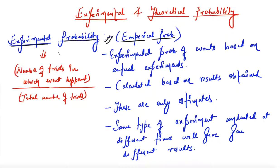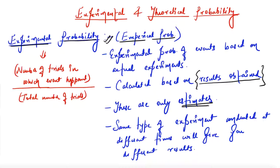Whatever experiments you did — maybe tossing a coin, maybe throwing a dice — based on the outcomes you get over thousands or lakhs of trials, you judge how many times you got a head or a tail. That is experimental probability. It is calculated based on the results obtained in your experiments, and these are only estimates, not exact values.